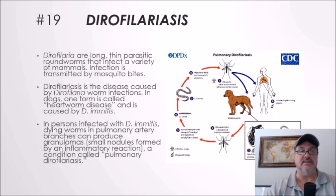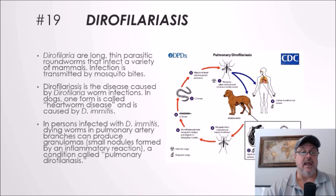Number nineteen — back to a parasitic disease: dirofilariasis. Dirofilaria are long, thin parasitic roundworms that infect a variety of mammals; infections are transmitted by mosquito bites. One form is heartworm disease in dogs, caused by Dirofilaria immitis. In people infected with Dirofilaria immitis, dying worms in pulmonary artery branches can produce granulomas, a condition called pulmonary dirofilariasis.